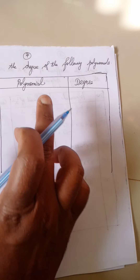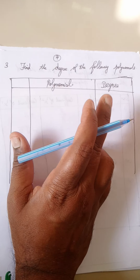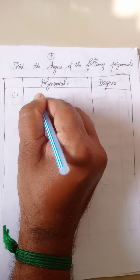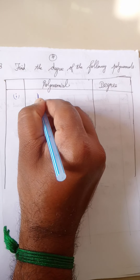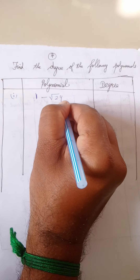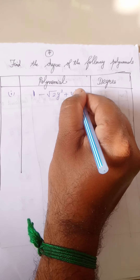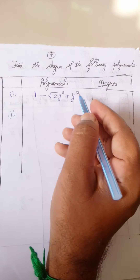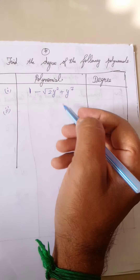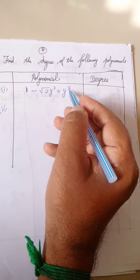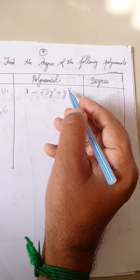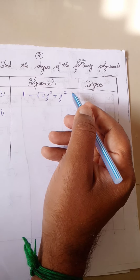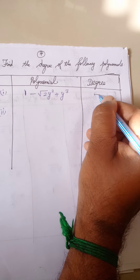Find the degree of the following polynomials. First one: 1 minus square root 2 y square plus y power 7. What is the degree? The highest power is 7. So the degree is 7.